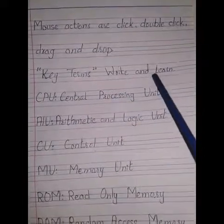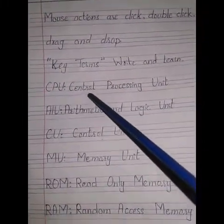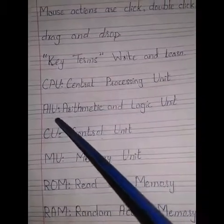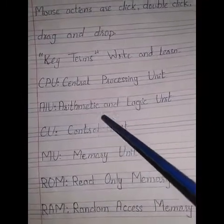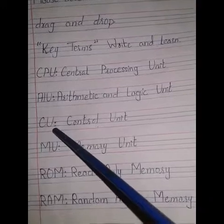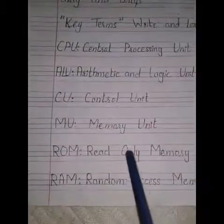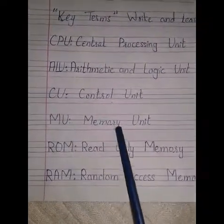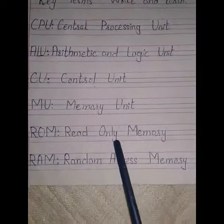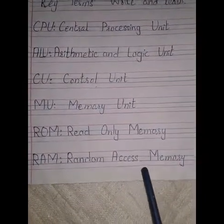Key terms — write and learn. CPU: Central Processing Unit. ALU: Arithmetic and Logic Unit. CU: Control Unit. MU: Memory Unit. ROM: Read Only Memory. RAM: Random Access Memory.